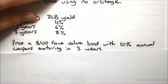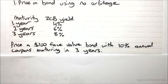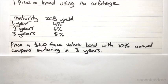Imagine that we have the following yields on zero-coupon bonds, and we want to price a three-year bond with a $100 face value and 10% annual coupons. Using the No-Arbitrage Pricing Principle, we know that the price of the bond should be equal to the price of the portfolio of zero-coupon bonds that could be used to create the same cash flows.